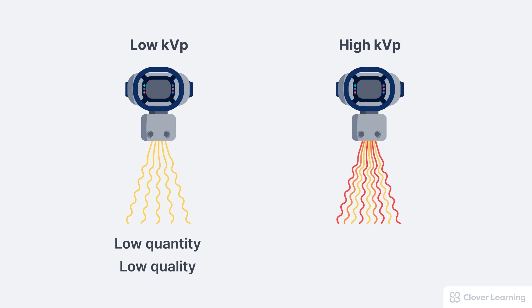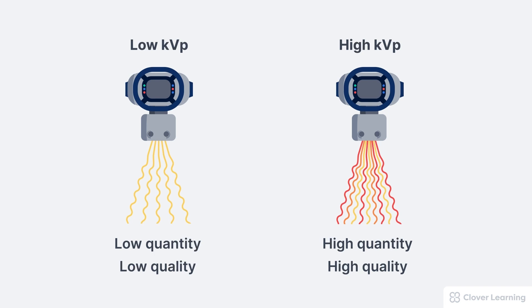The second x-ray beam on the right was created using a higher kVp. This results in significantly more x-ray photons — so that's high quantity or high intensity — but it also results in high quality, because when we increase the kVp, this increases the average energy of the x-ray photons in the beam.